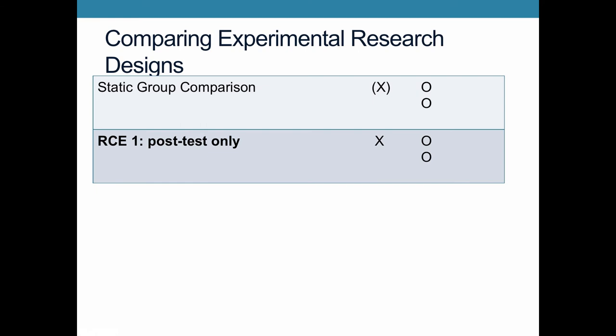Now let's move into actual experimental designs. The first is a randomized control experiment, RCE, where you're only looking at the post-test. You impose the treatment and then compare the two groups afterward — the treatment group and the control group. The difference between them represents the causal effect.